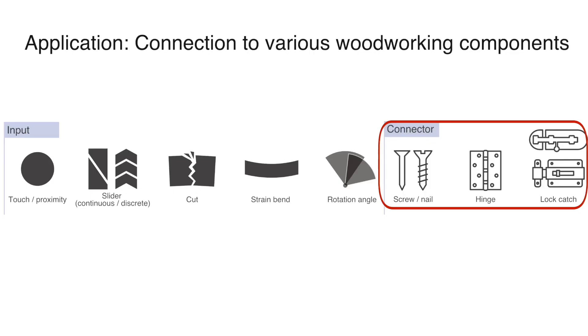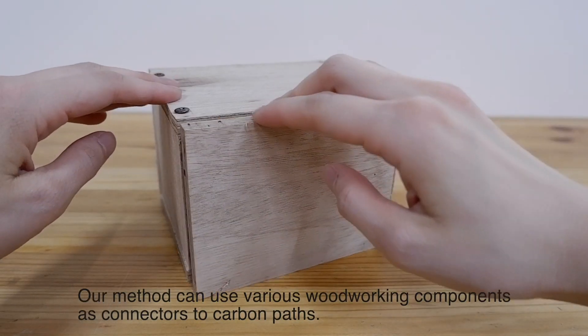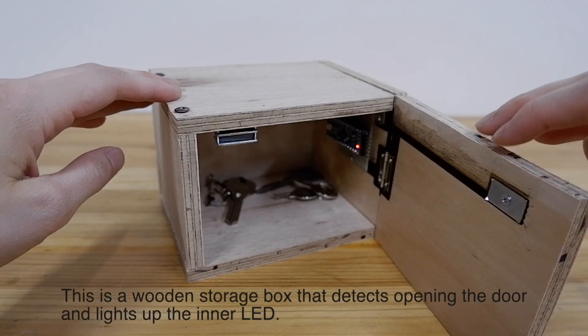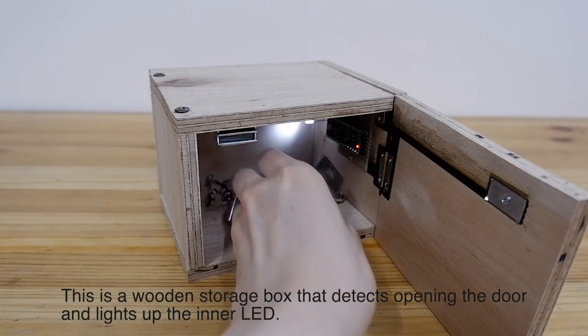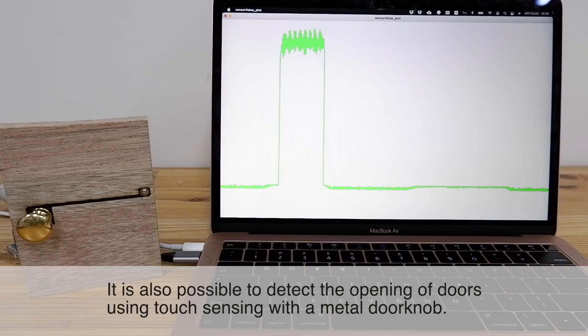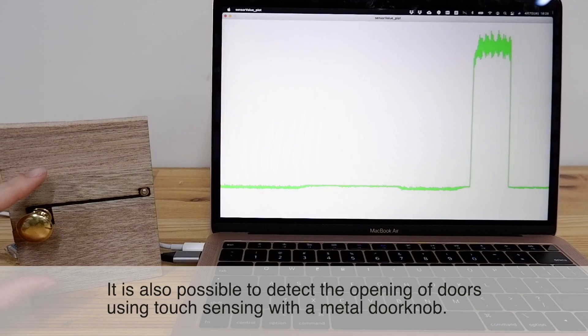Application for connection to various woodworking components. Our method can use various woodworking components as connectors to carbon paths. This is a wooden storage box that detects opening the door and lights up the inner LED. It is also possible to detect the opening of doors using touch sensing with a metal doorknob.